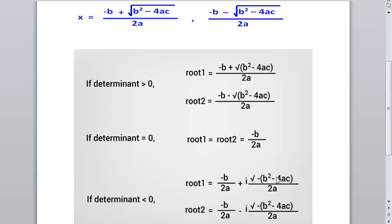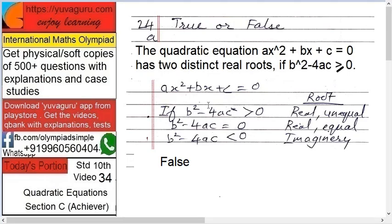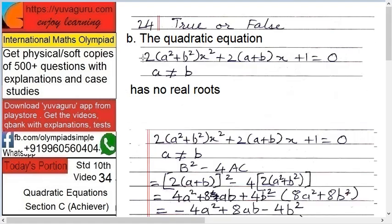So that first statement is false. Next sub-question: the quadratic equation 2(a² + b²)x² + 2(a + b)x + 1 = 0, where a ≠ b, has no real roots, meaning the roots are imaginary. To prove this, we need to show that capital B² - 4AC is less than zero.